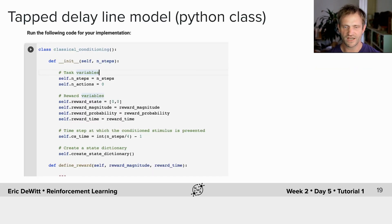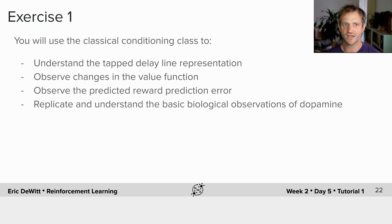We've provided you with a classical conditioning Python class, which you'll use for your tutorial today. In exercise one, you will use this classical conditioning task to understand the tapped delay line representation, observe changes in the value function, observe the predicted reward prediction error, and replicate and understand these basic biological observations of dopamine. Look forward to seeing you on the other side.